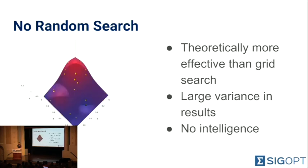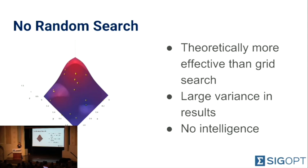An alternative is random search. Random search has been shown to be theoretically more effective than grid search, which surprises me every time. However, there is a large variance in results, and random search does not take advantage of learning from the past to inform its next decision — you just pick a random point every time and evaluate it. There's also little guidance on how many points you should pick.